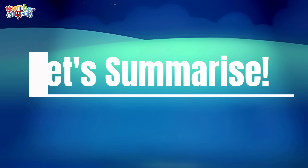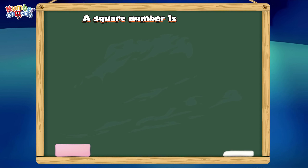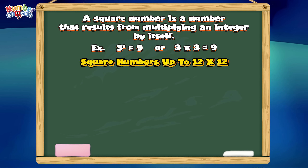Now let's summarize. A square number is a number that results from multiplying an integer by itself. For example, three square is equals to nine, or three times three is equals to nine. Now let's check out square numbers up to twelve by twelve.